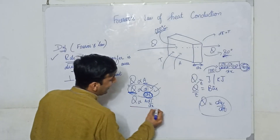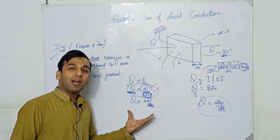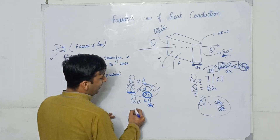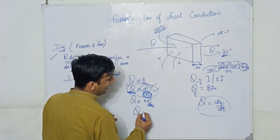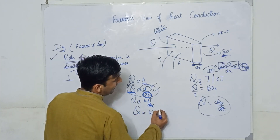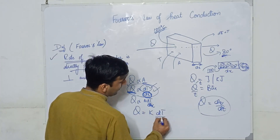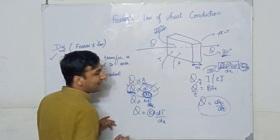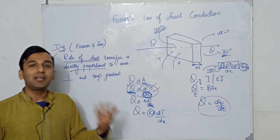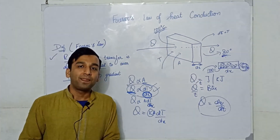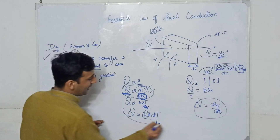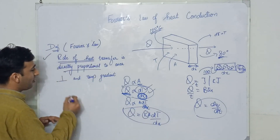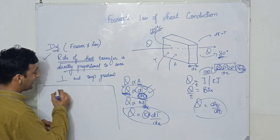If I combine these two proportionality equations and remove the sign of proportionality, I get a constant K. This constant K is called thermal conductivity. This gives us the mathematical form of Fourier's law of heat conduction.